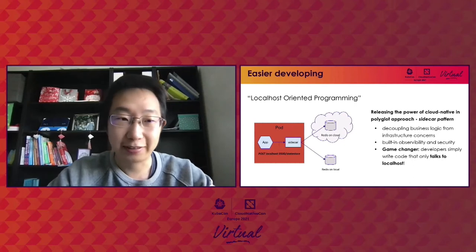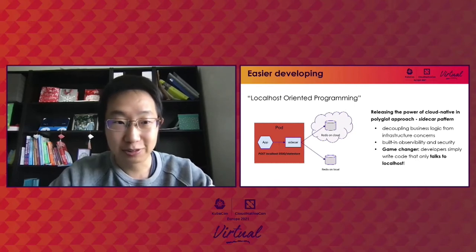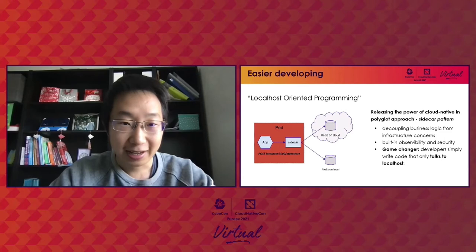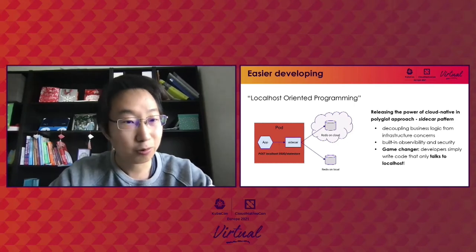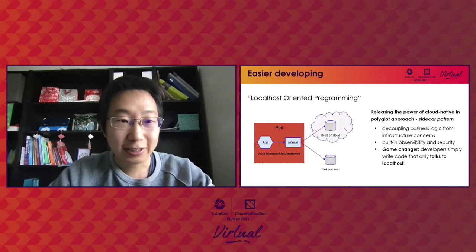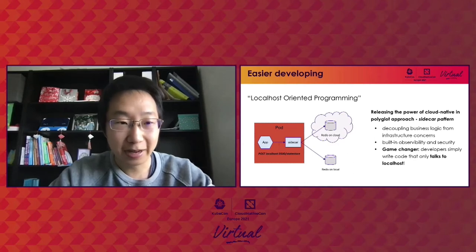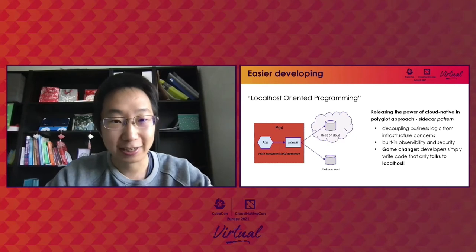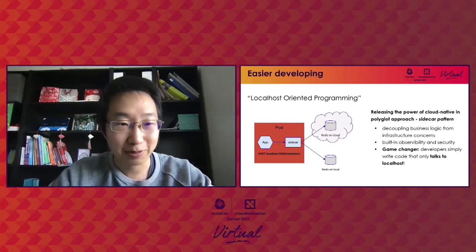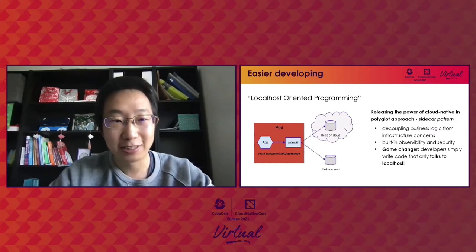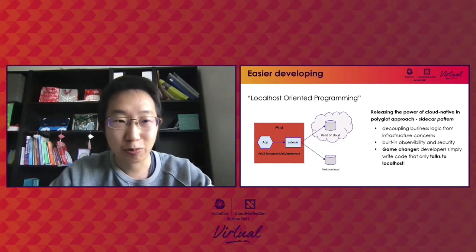With projects like Dapr, you now have the power to consume cloud resources and services based on Sidecar. Your application can just talk to localhost to consume a cloud resource, for example a Redis instance. This also enables you to deploy applications anywhere, regardless of where the cloud resources are — whether it's on AWS or Google Cloud, it doesn't matter. It can even be a locally maintained Redis instance, because your application only talks to localhost and lets the Sidecar handle the rest of the resource consumption and service binding by leveraging the Dapr runtime. We call this localhost-oriented programming — the application really doesn't need to care about dependencies or external resources, just focus on your application logic.